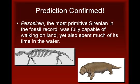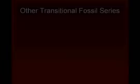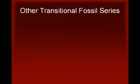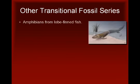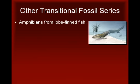So, there you have it. Fossil discoveries, combined with evidence from morphological, genetic, and embryological studies of existing organisms, lead us to a powerful explanation of a large set of biological observations. But these six examples only scratch the surface. Other transitional fossil series include fossils documenting the evolution of amphibians from lobe-finned fish, the evolution of mammals from reptiles, the evolution of birds from theropod dinosaurs.